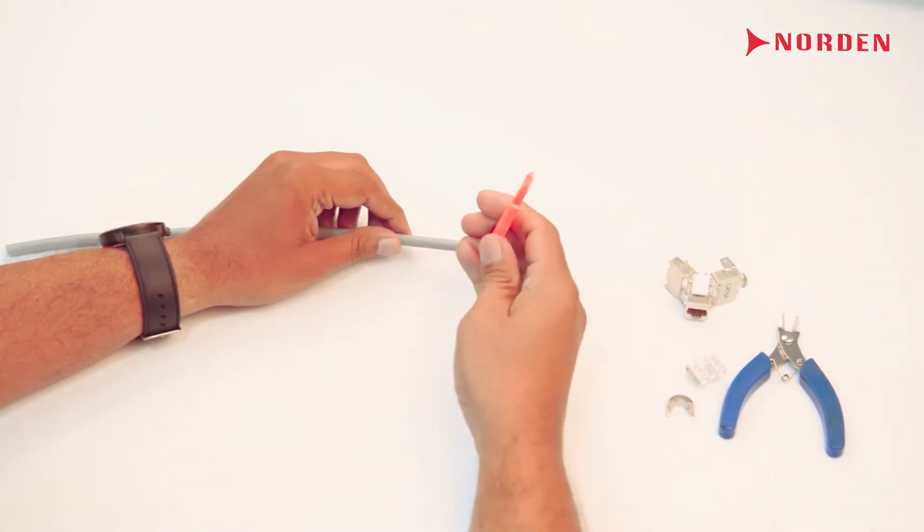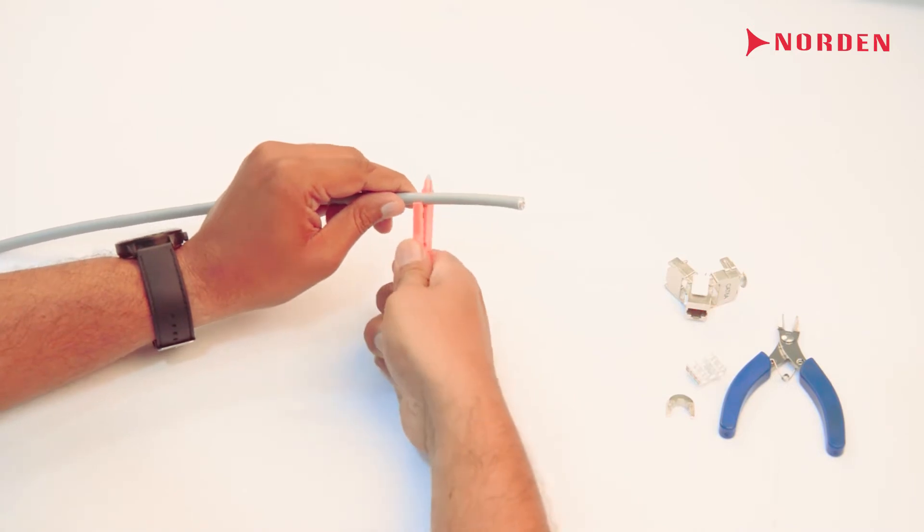Take the cable jacket stripper and remove the cable jacket approximately one and a half inches.